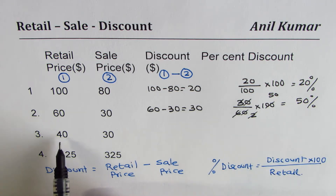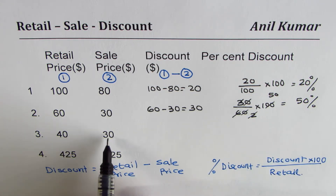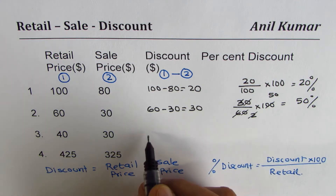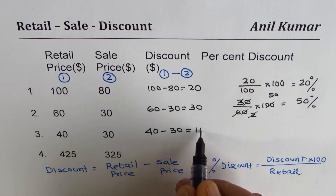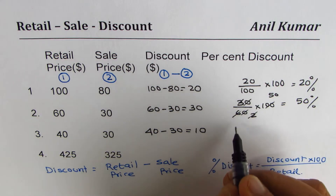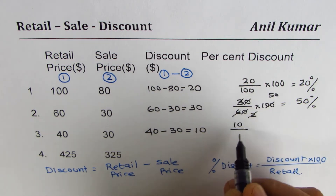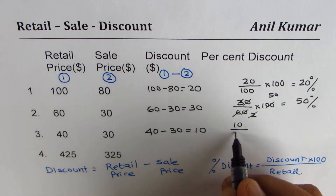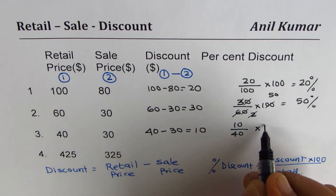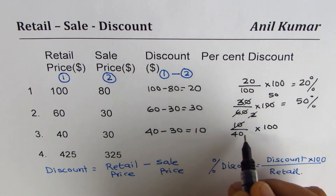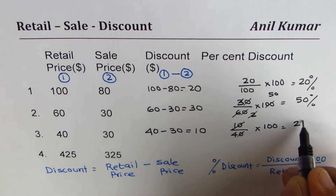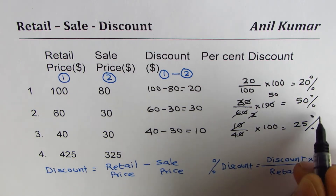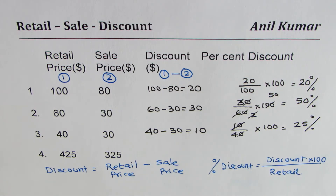Next, retail price is $40 and sale price is $30, so the discount is 40 minus 30, which is $10. The percent discount is 10 divided by 40, times 100. You can divide 100 by 4 to simplify, giving us 25 percent.